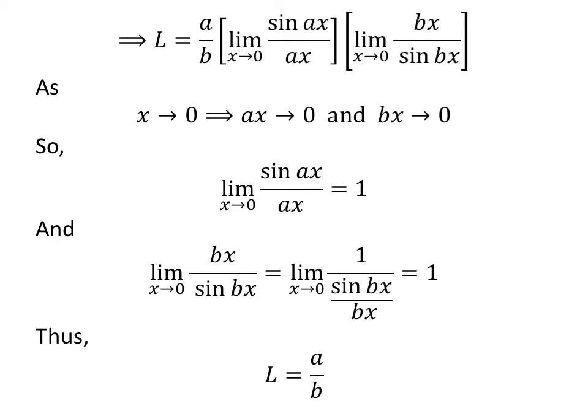So the above statements give us the limit l is equal to a upon b. Therefore, the limit of sin of a times x upon sin of b times x as x approaches 0 is equal to a upon b.